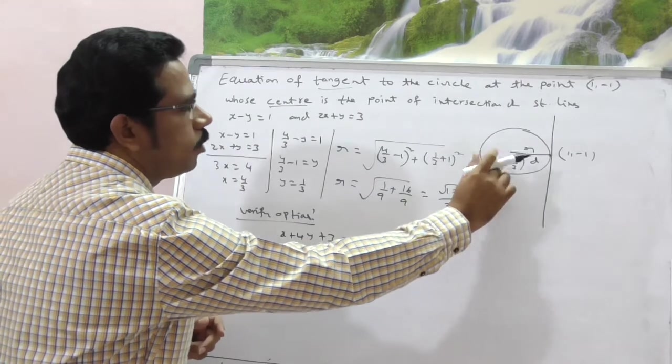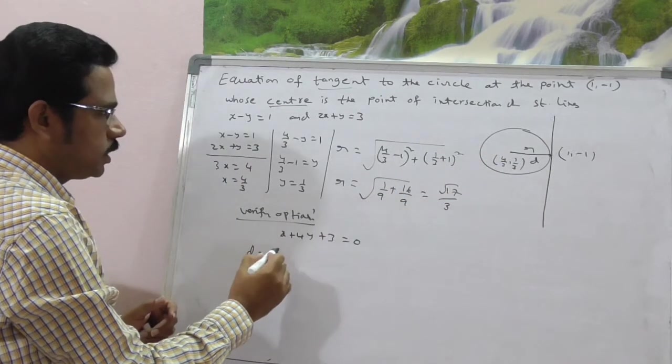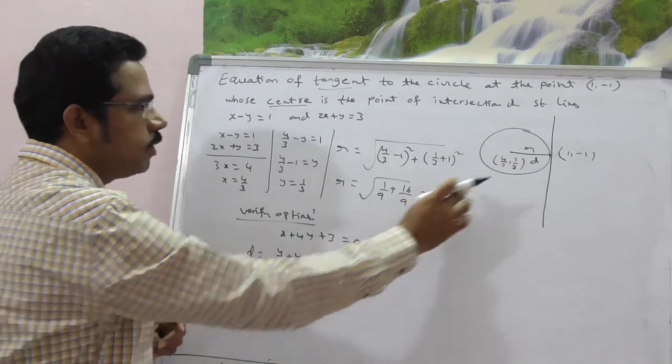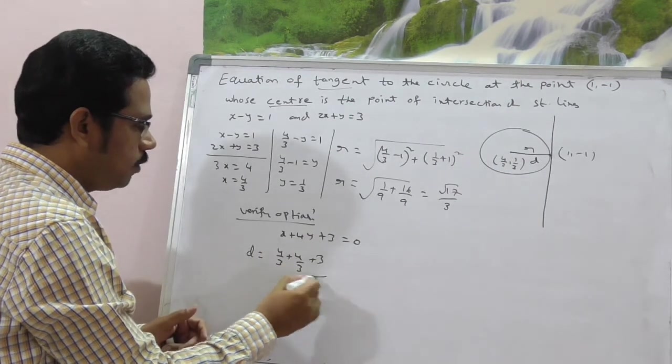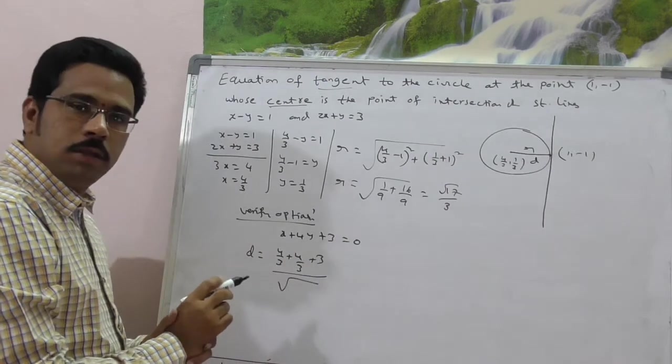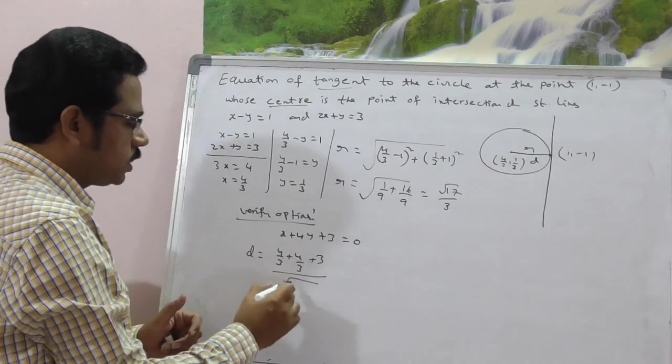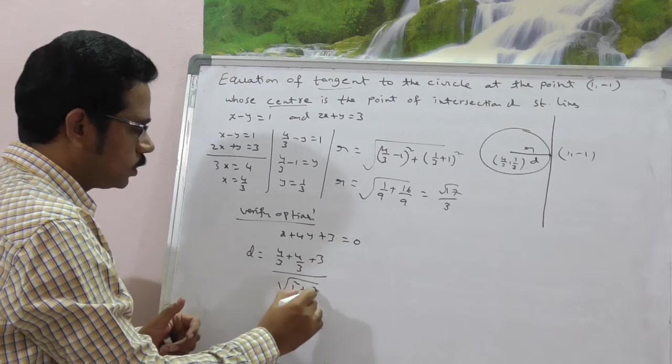That is nothing but d here. What is the center? (4/3, 1/2). Substitute in place of x. 4 by 3 plus 4 of what is y? 1 by 3. 4 of 1 by 3, again 4 by 3 plus 3 by square root of, what is this? x coefficient square, 1 square plus y coefficient square, 4 square.